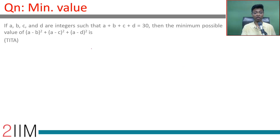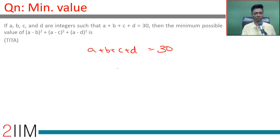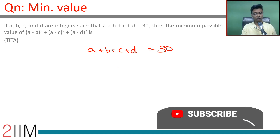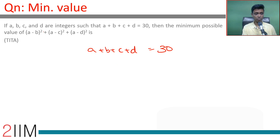A, B, C, D are integers such that A plus B plus C plus D equals 30. The minimum possible value of (A minus B) whole square plus (A minus C) whole square plus (A minus D) whole square is — remember, all are positive integers.